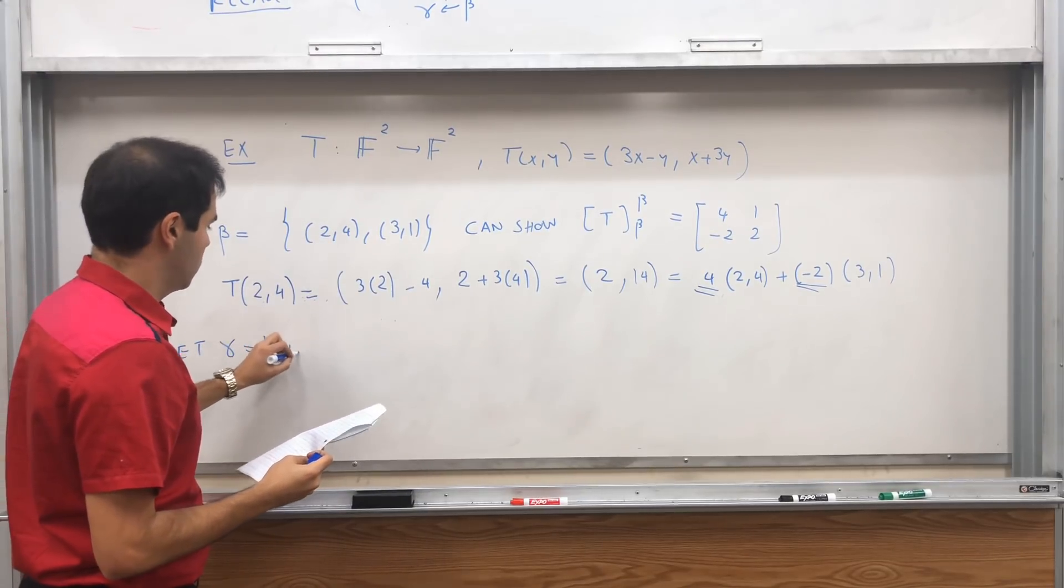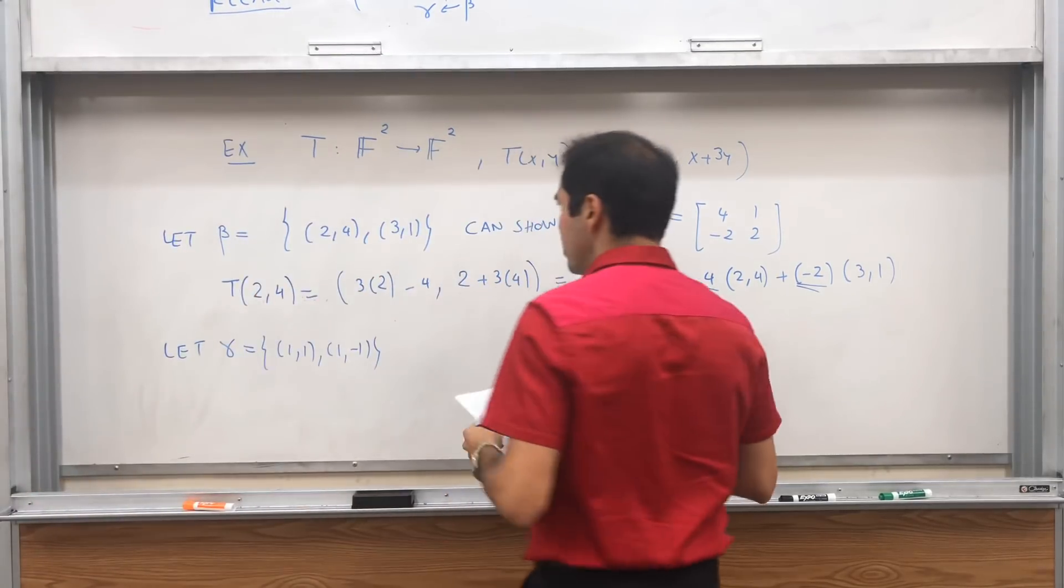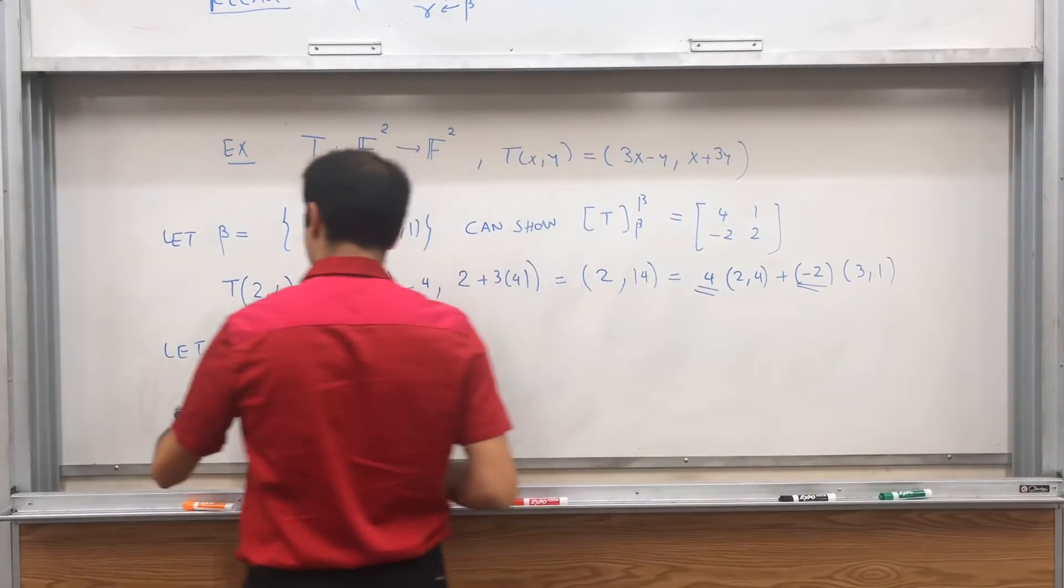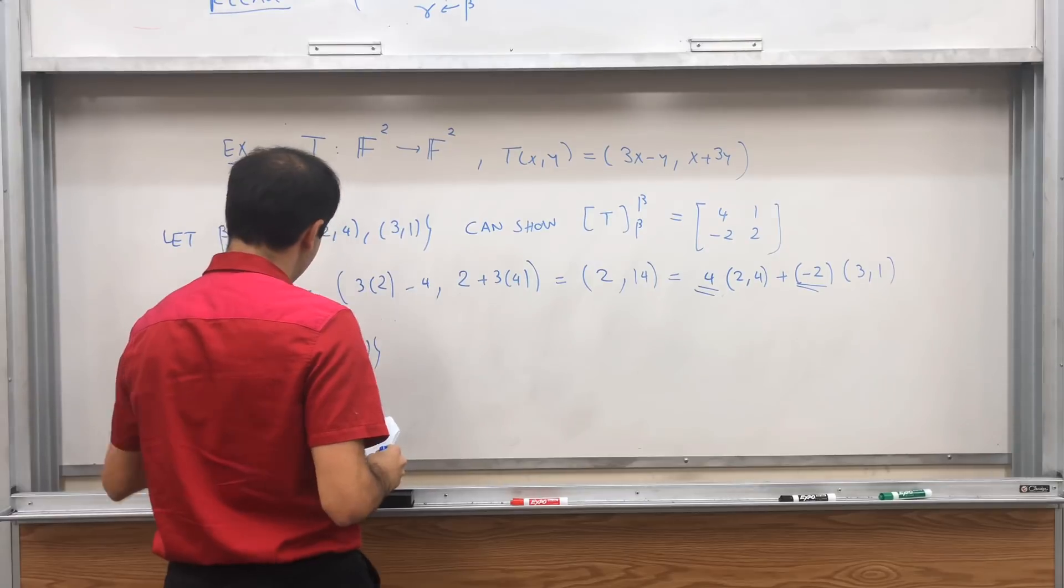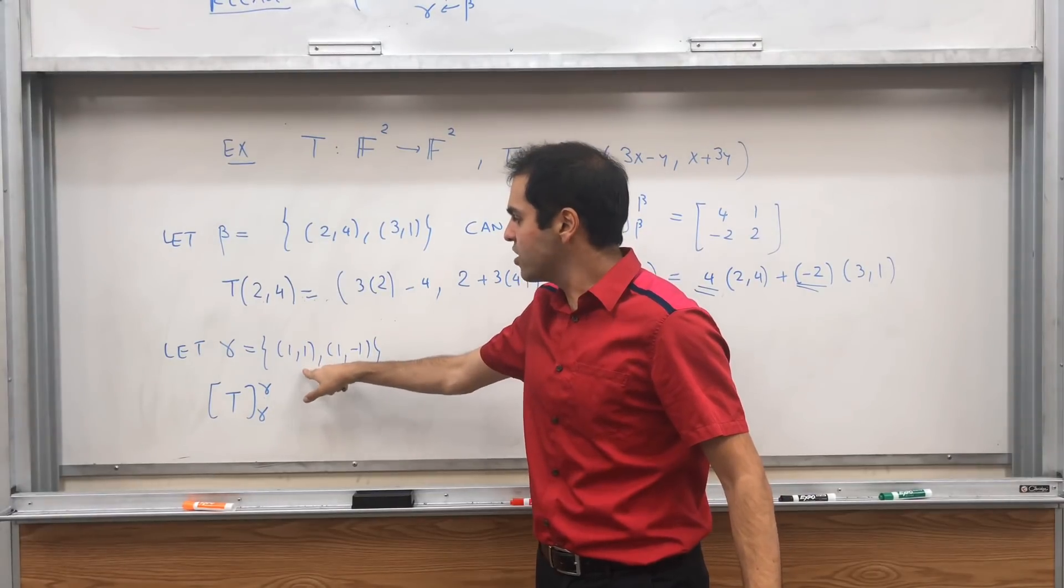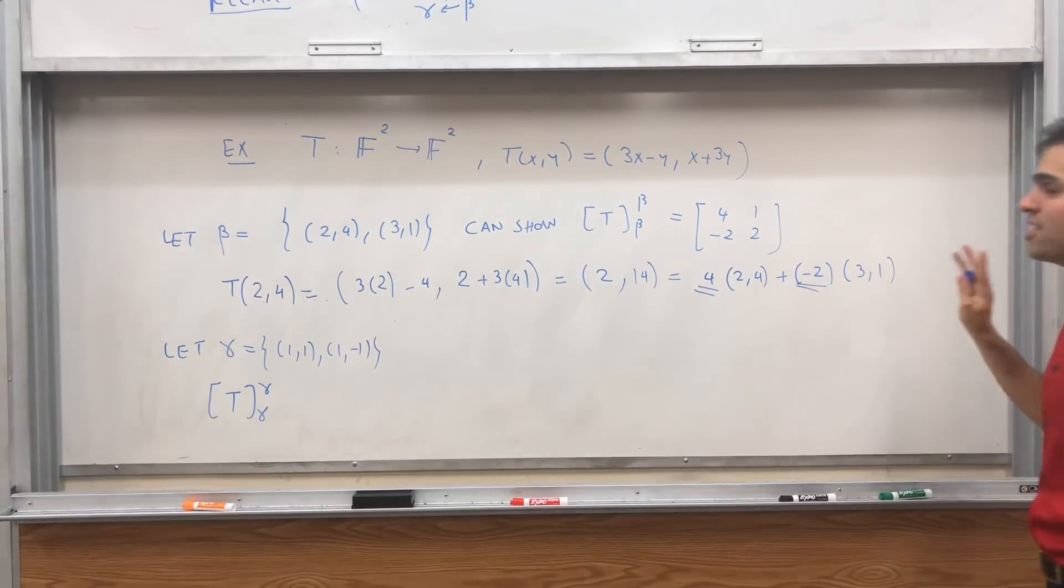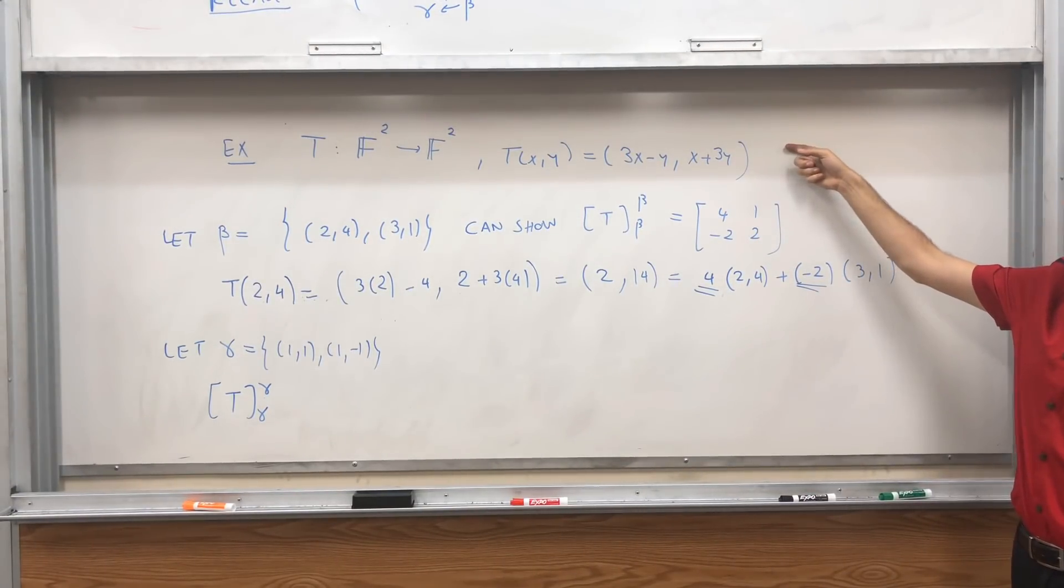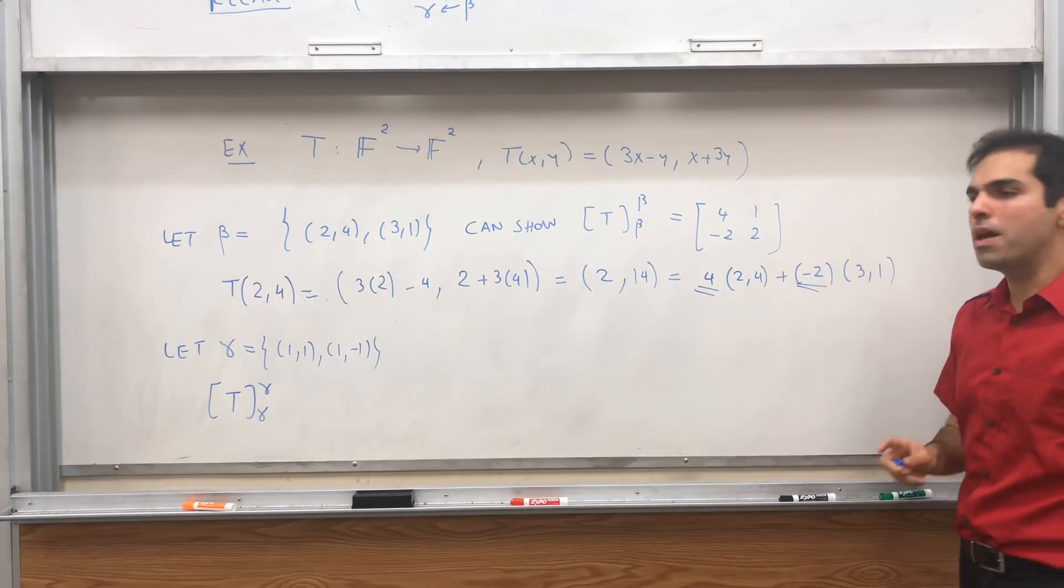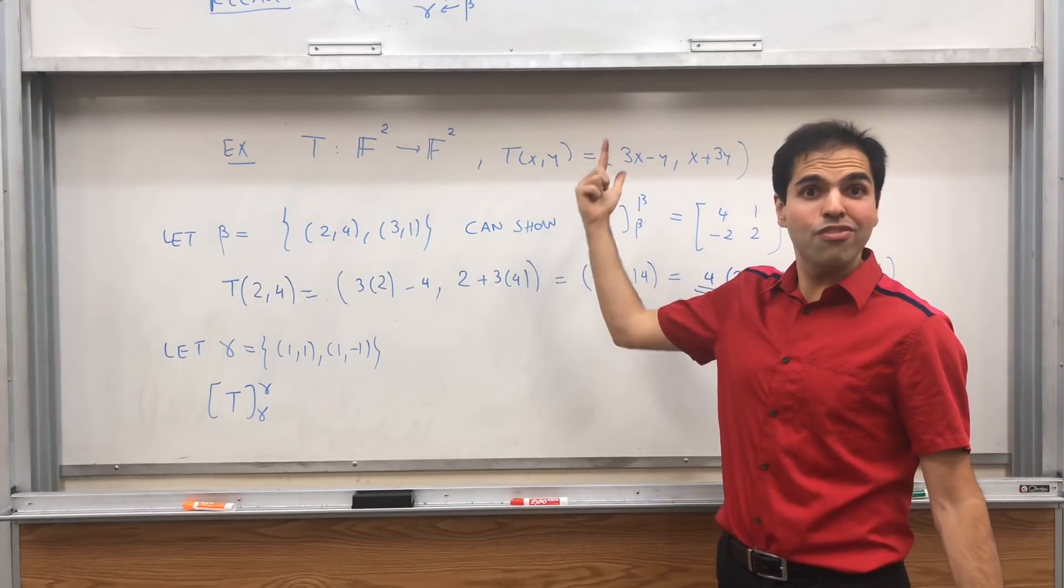So suppose I give you the following: gamma is (1,1), (1,-1). The question is, suppose your boss asks you to calculate the new matrix of T. Well, then technically it would be a pain. It means evaluate T at those vectors, express them in terms of those vectors, and same for this one. Especially annoying if you don't know what the formula is. So it's possible that your boss is just like, well, here's the old matrix, I don't remember what T is.